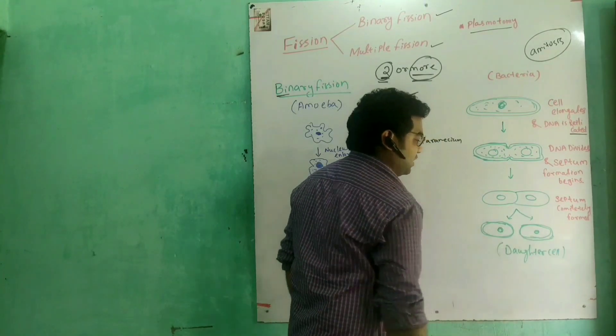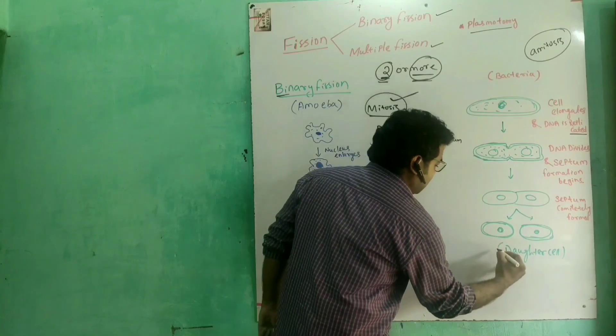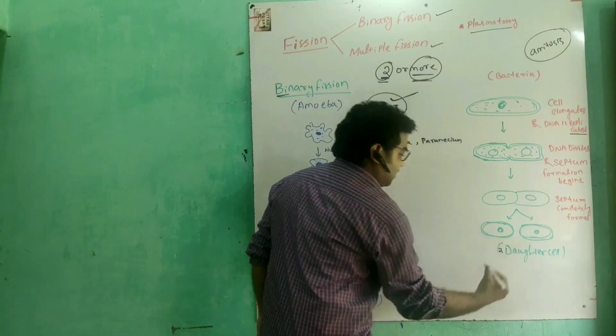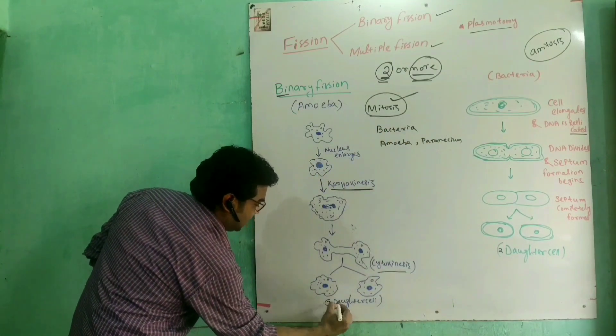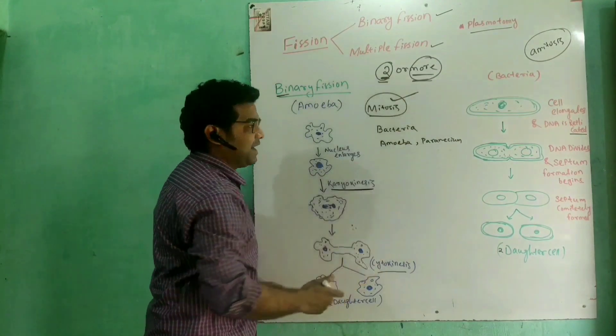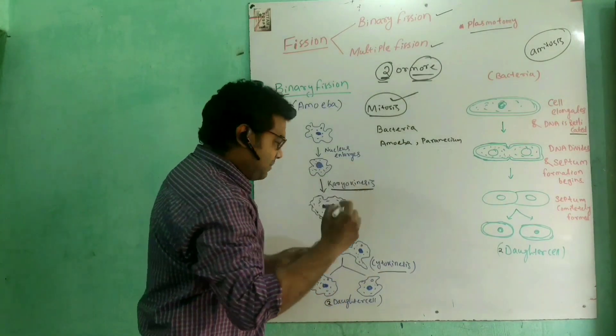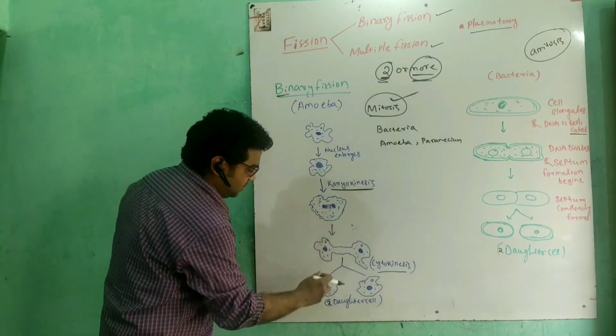The cell is divided. The parent cell is divided into daughter cells in binary fission.